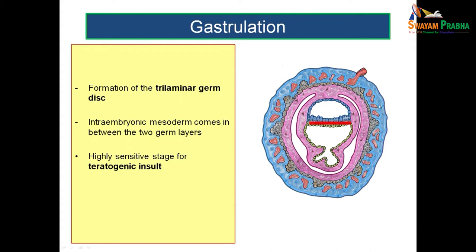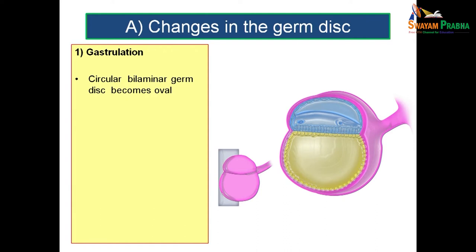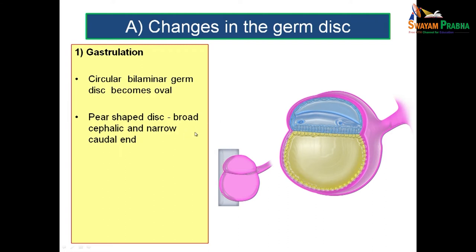The intraembryonic mesoderm is formed between the ectoderm and endoderm. By the end of second week, we have a bilaminar germ disc. By the process of gastrulation, this bilaminar germ disc becomes an oval disc, now called trilaminar germ disc, by the formation of intraembryonic mesoderm.